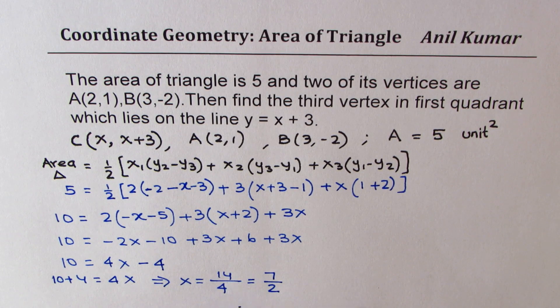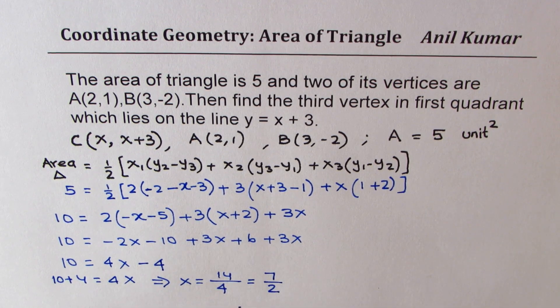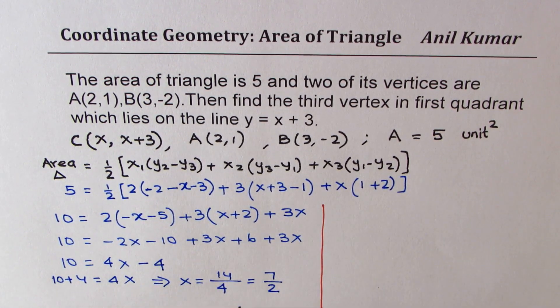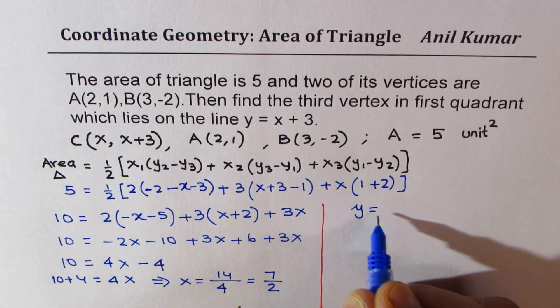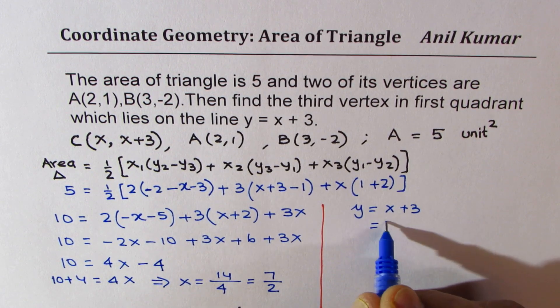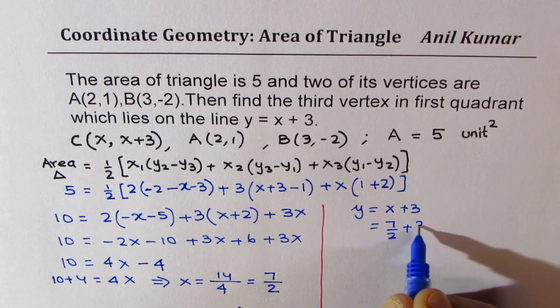And once you know x, you can find the y value. Let's write down on the right side. Y is x + 3, so the y coordinate value is x + 3 which should be 7/2 + 3.